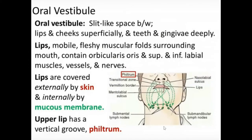The oral vestibule is the slit-like space between the lips and cheeks superficially, and the teeth and gingiva deeply. The teeth and gingiva — maxillary and mandibular — form the deep wall of the vestibule, while the cheeks and lips form the superficial wall of the vestibule.